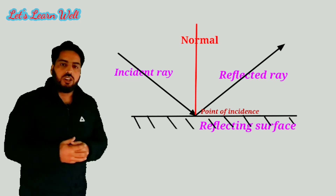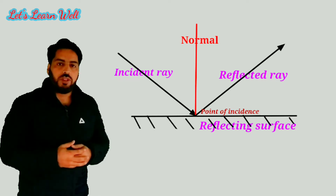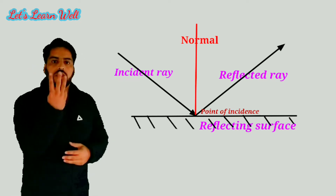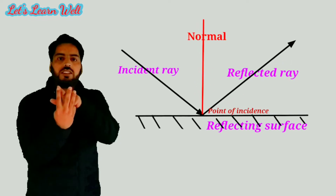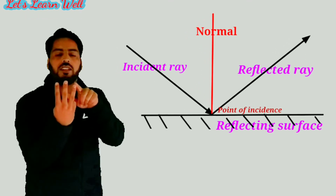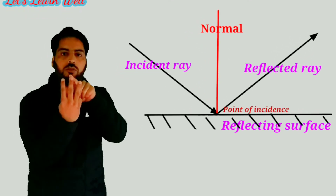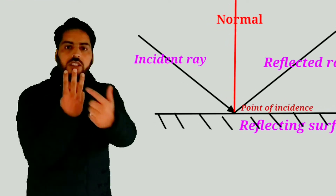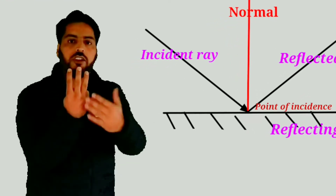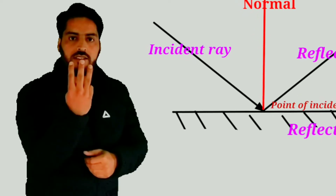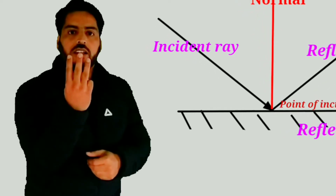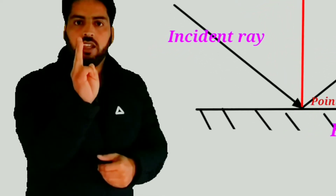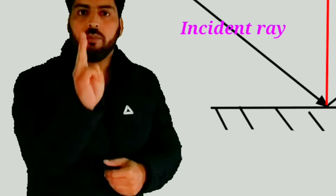Now, what does it mean that they all lie in the same plane? We can explain this with the help of three fingers. Suppose this is the incident ray, this is the reflected ray, and this is the normal. When you see this, you are seeing basically the side view of all three rays. When I turn it to the right, you can see that they all are lying in the same plane.